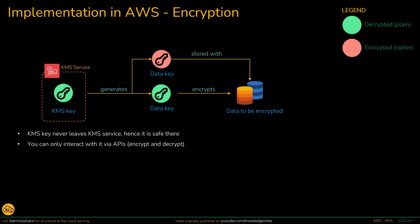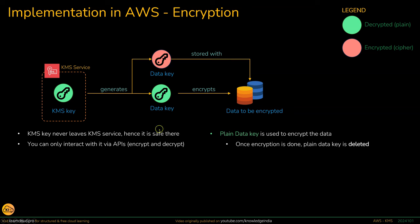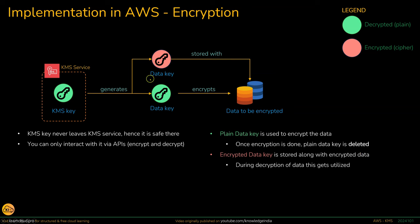What happens as part of encryption: you or the system requests KMS service to generate a data key. KMS service returns back the plain format of the data key and the encrypted format of the data key. The plain format is used to do the encryption, and once the encryption is done, the plain data key is deleted. The encrypted data key gets stored along with the encrypted data, because it will be utilized later on to do the decryption. Now let's understand the decryption process.